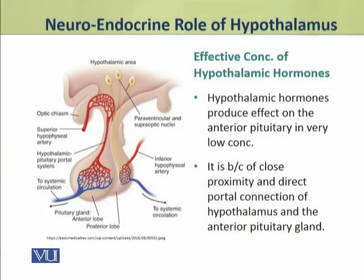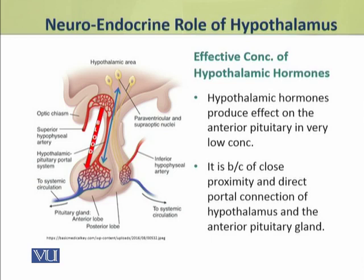Dear students, hypothalamic hormones bahut thodi concentration mein anterior pituitary ke upar bada effect rakhte hain, so they are effective in very low concentration. It is because of close proximity and direct portal connection between the hypothalamus and anterior pituitary. Anterior pituitary bilkul hypothalamus ke saath linked hai. Yahi wajah hai ki inmein portal connection yaani ke blood ka connection bhi direct hai aur close bhi hai, isliye bahut thode se hormones bhi pituitary ke upar kaafi bada asar rakhte hain.